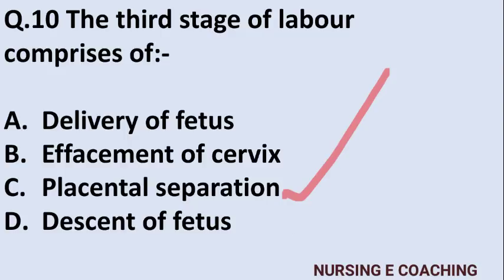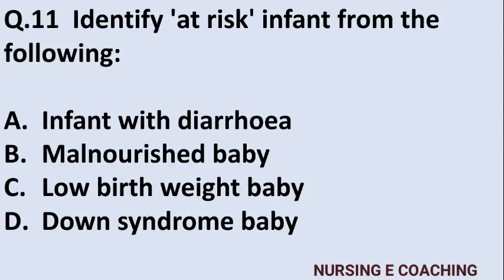Question 11: Identify the at-risk infant from the following — Option A: infant with diarrhea, Option B: malnourished baby, Option C: low birth weight baby, Option D: Down syndrome baby. Answer is C — low birth weight baby.